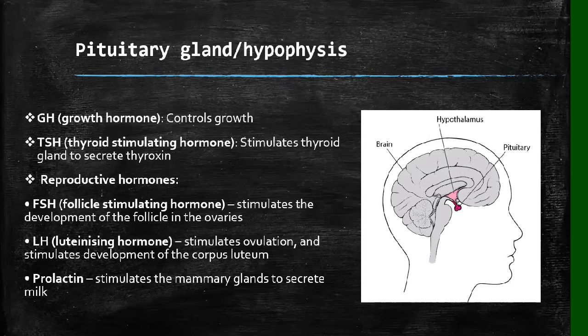The reproductive hormones include the follicle stimulating hormone, which stimulates the development of the follicle in the ovaries — we covered this when we discussed the menstrual cycle. We also have the luteinizing hormone, which stimulates ovulation and the development of the corpus luteum. The luteinizing hormone triggers the mature egg to be released into the fallopian tube where fertilization can take place. It also stimulates the development of the yellow body. And then we have prolactin, which stimulates the mammary glands to secrete milk.